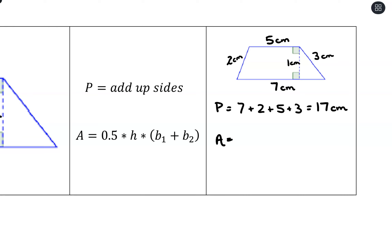For the trapezoid's area, we take one half times the height times the sum of the two bases. So one half times one times the quantity seven plus five gives us one half times twelve, which equals six square centimeters.